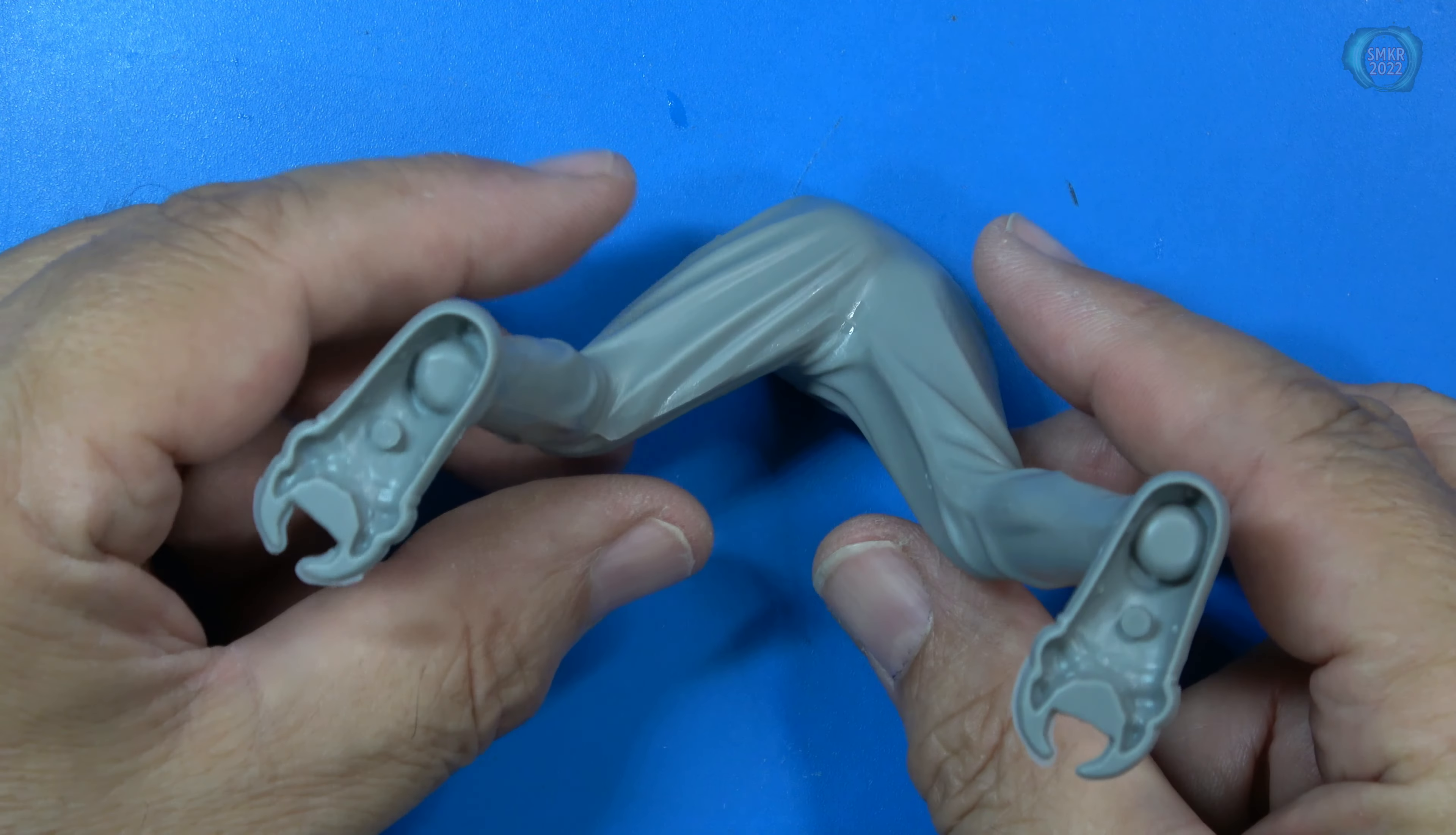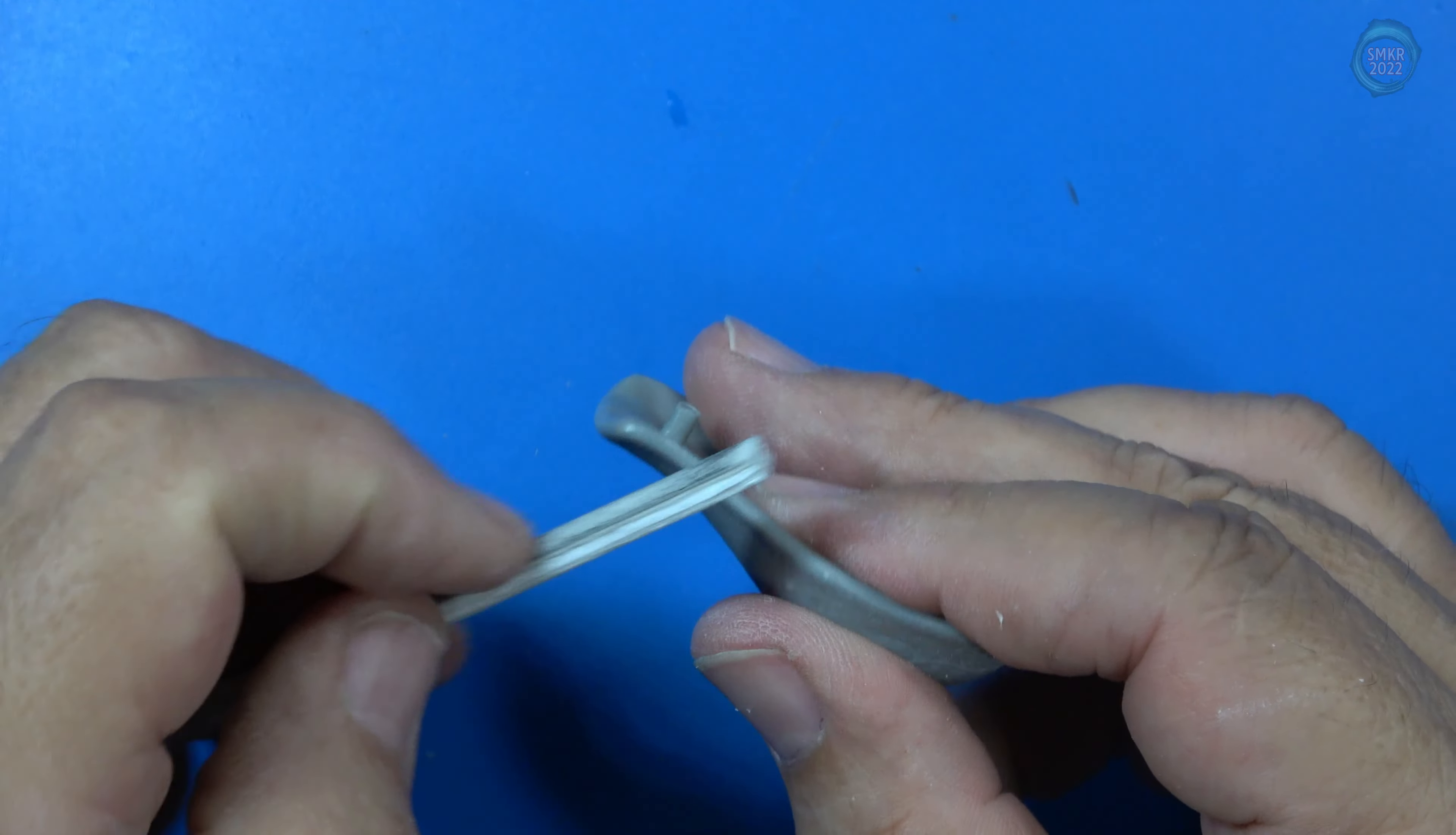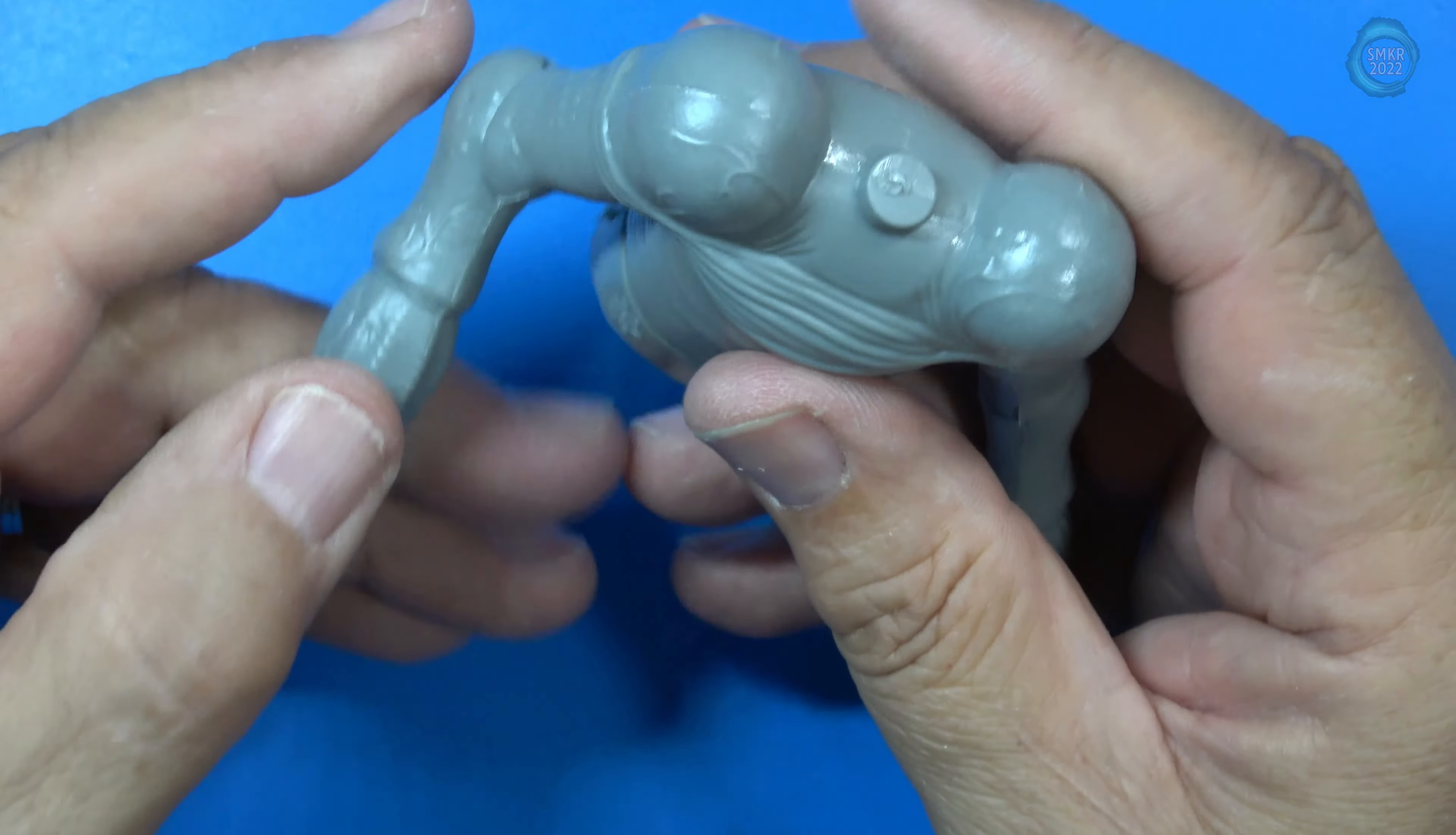Before I glue this on, I'm going to clean up the sprue attachment point and any of the seam lines around there before I glue it down. It's just going to make it easier. Kind of go around it. There isn't really much there. Let's clean it up very nicely. Now let's bring over our torso. It has pretty much dried already.